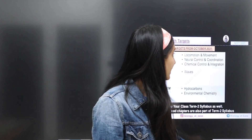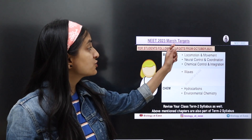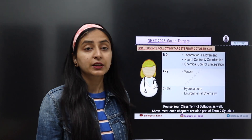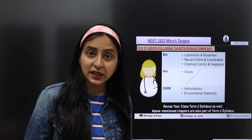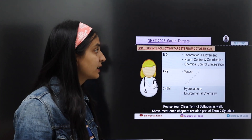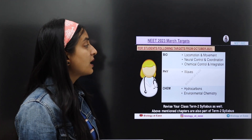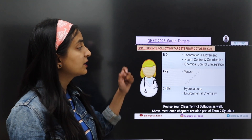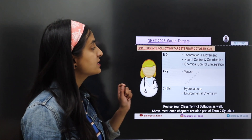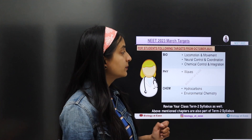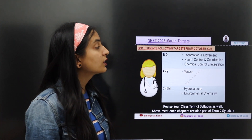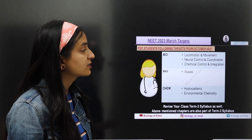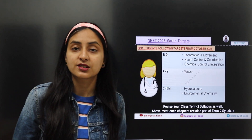The aspirants are divided into three categories. First, those who are following my monthly targets from October 2021 — they have to do these chapters in March: Biology Class 11 — Locomotion and Movement, Neural Control and Coordination, and Chemical Coordination and Integration.